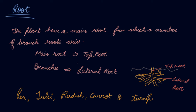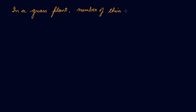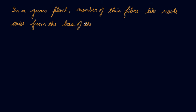In grass plants, a number of thin fiber-like roots arise from the base of the stem. They spread out in the soil and give support to the plant.